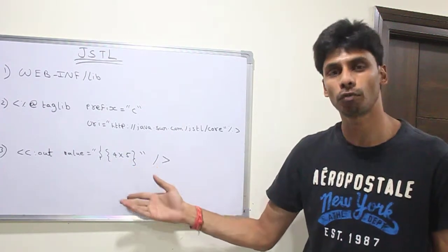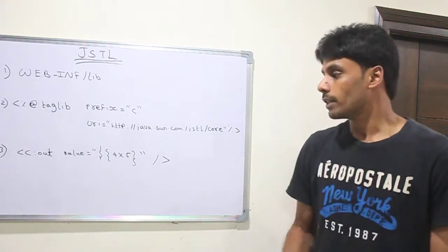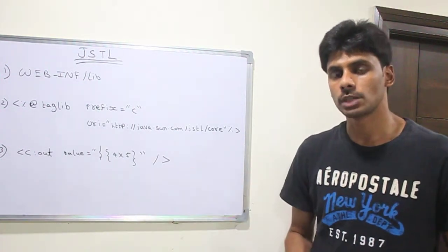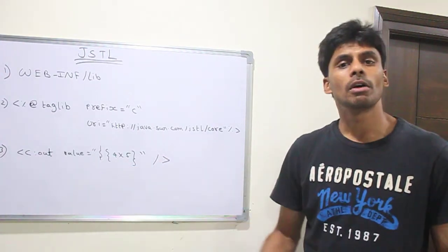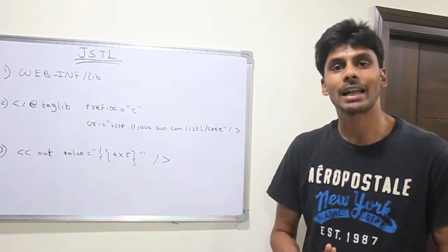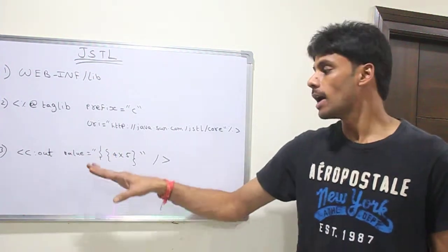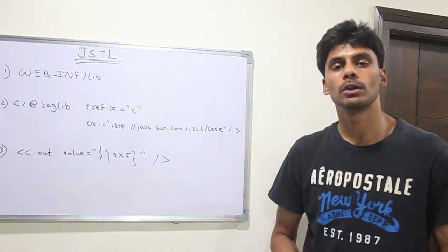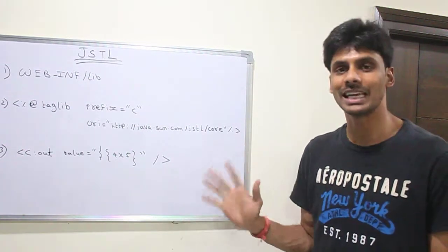Simply I am printing 4 into 5. This will display this on the browser without writing any Java code or using expression JSP expression tags. You can similarly print the values, iterate through the values of a Java collection using C colon for each or C colon for and then display the various values without writing any Java code in your JSP page. That's the beauty of JSTL.